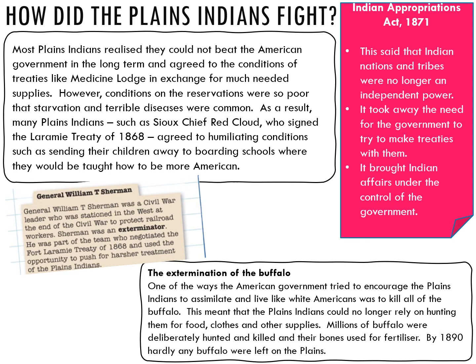The Indian Appropriations Act of 1871 removes the independence under the law of the Indians. It takes away the need for the government to make treaties, because they don't recognise the Indian nations as being an independent power — they just have to follow the law the government dictates to them. So it brings Indian affairs under the control of the government in order to solve the Indian problem.